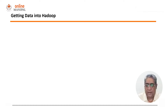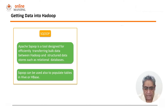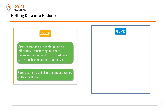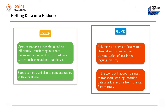Now that we have a Hadoop cluster and have seen its eco-applications, how do we get data inside Hadoop? One of the tools for doing that is Sqoop, which is a tool for transferring data between Hadoop and a relational database management system. Sqoop can transfer data both ways and is used to populate tables in a Hive or HBase environment. Another tool is Flume — the English meaning of flume is an artificial water channel used in the logging industry for moving logs. In the Hadoop world, Flume is used for transferring log data from web servers, database servers, or any other servers into Hadoop.